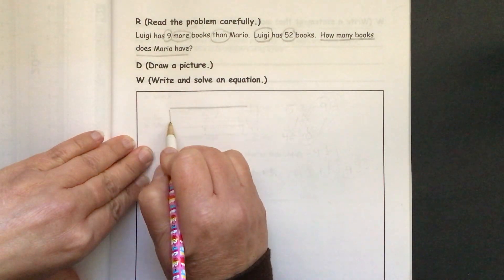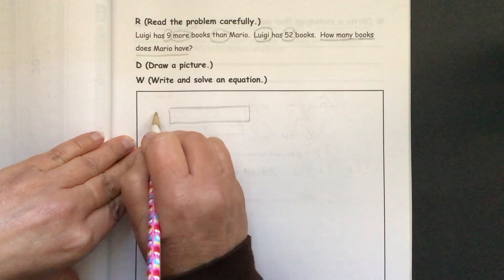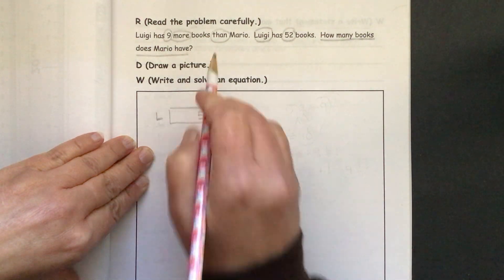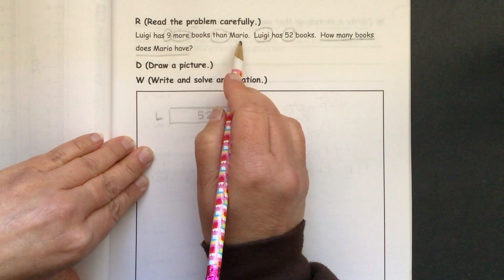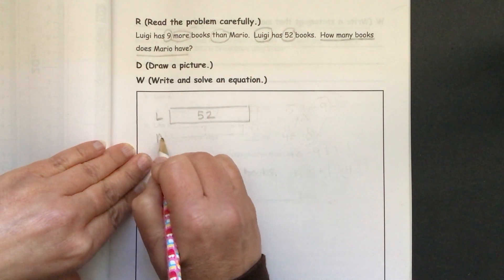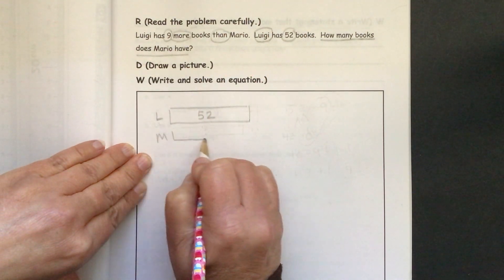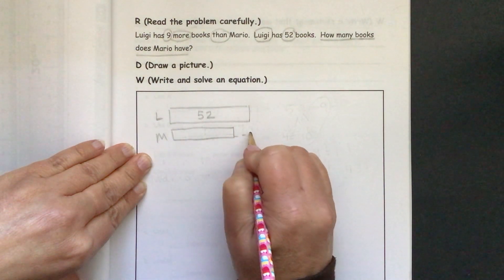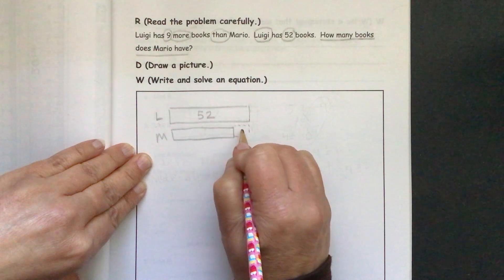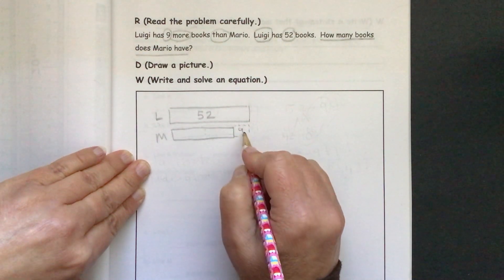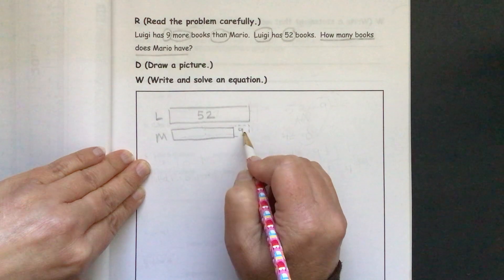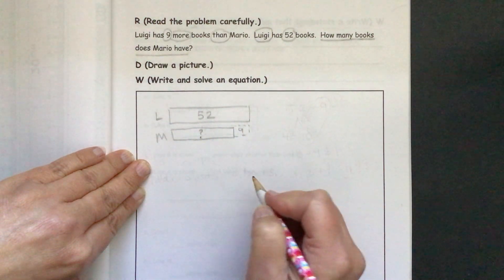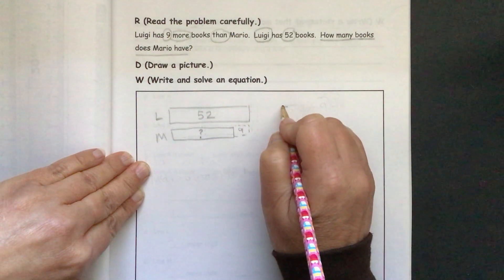Let's start with our tape diagram where Luigi has 52 books. We know that Luigi has nine more books than Mario. Here's from Mario. Let me make this a little shorter. And here are the nine books that Luigi has more of than Mario. So we need to find out how many books Mario has.